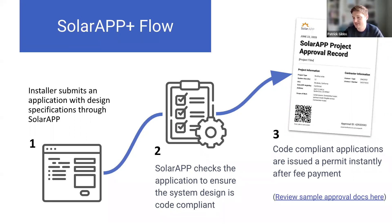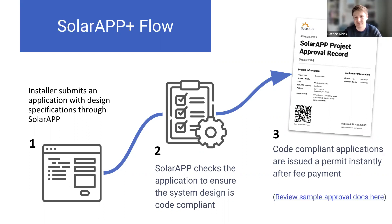If a contractor completes a compliant application, they will pay the SolarAPP administrative fee and your permitting fee. Once payment is complete, the permit is instantly issued with the inspection checklist and other content for your inspection team to verify in the field. This is through a no-touch process that allows for 24/7 instant permitting.